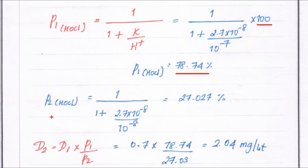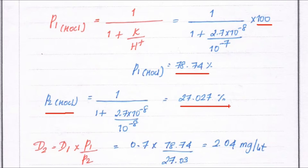Similarly, we calculate P2 = 1 / (1 + (2.7 × 10⁻⁸) / (10⁻⁸)) × 100. Substituting the values for pH2 = 8, we get P2 = 27.027%.